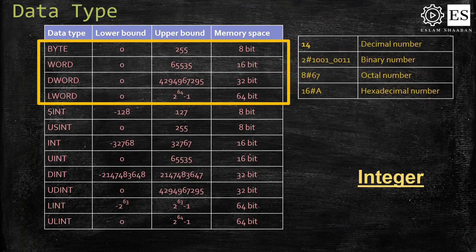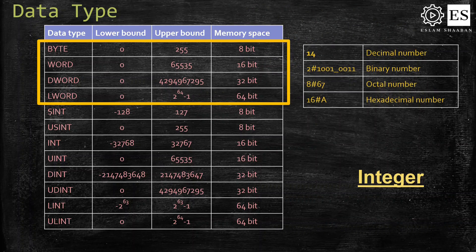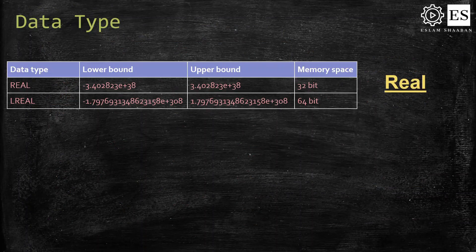It is possible to define the base of a variable by writing down the base number followed by a hashtag and then the value in that base format, as shown in the example. If you don't explicitly declare the base, the default base is 10, which means decimal.